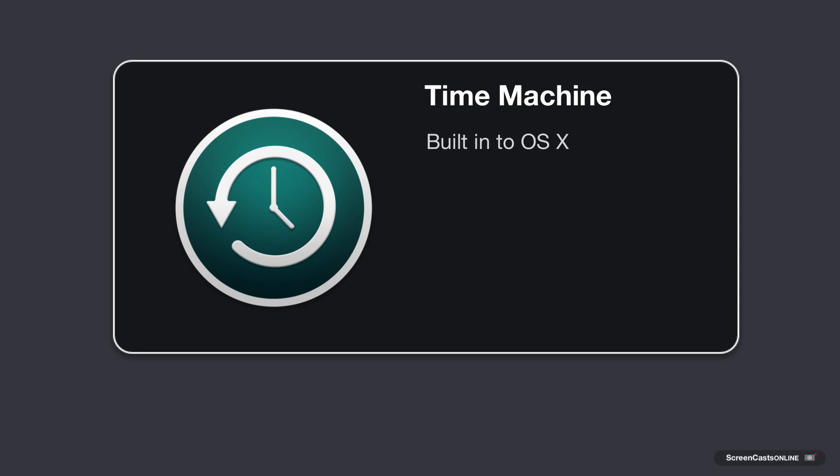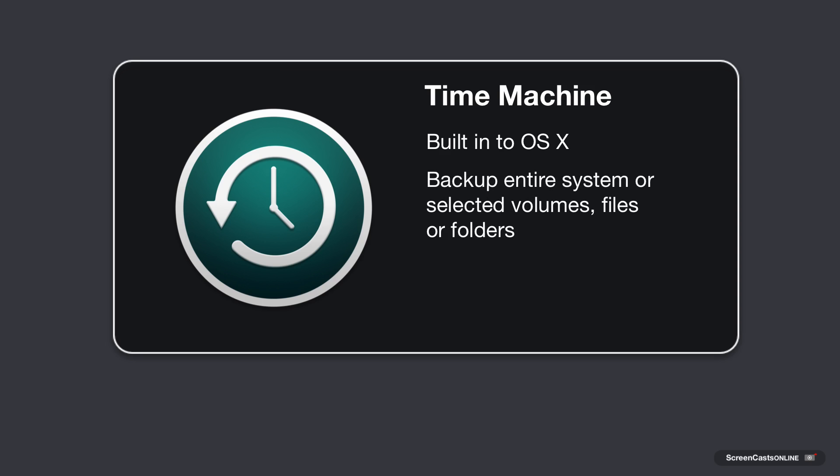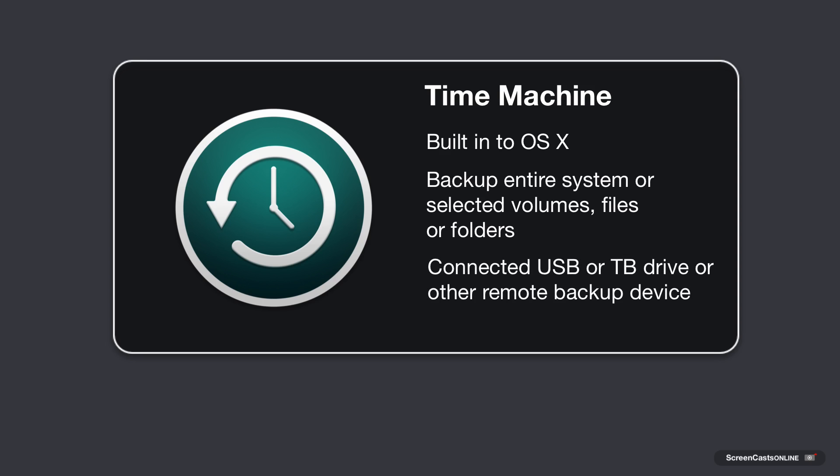As a very quick refresher: Time Machine is a mechanism built into OS X that allows you to backup your entire machine. You can exclude certain folders or directories as well. You back things up to either a locally connected USB drive or Thunderbolt drive, or you can connect to an Apple Time Capsule — which is basically an AirPort Extreme with a built-in hard drive — or an AirPort Extreme with an externally connected hard drive, or any number of third-party drives such as a Drobo or a Synology.